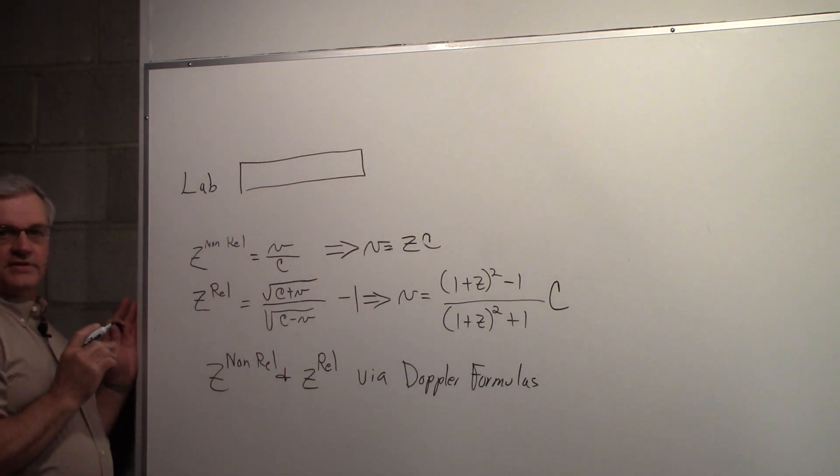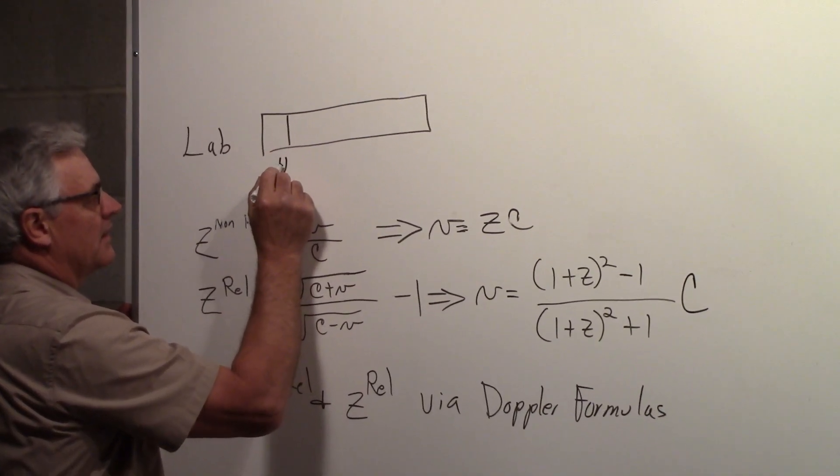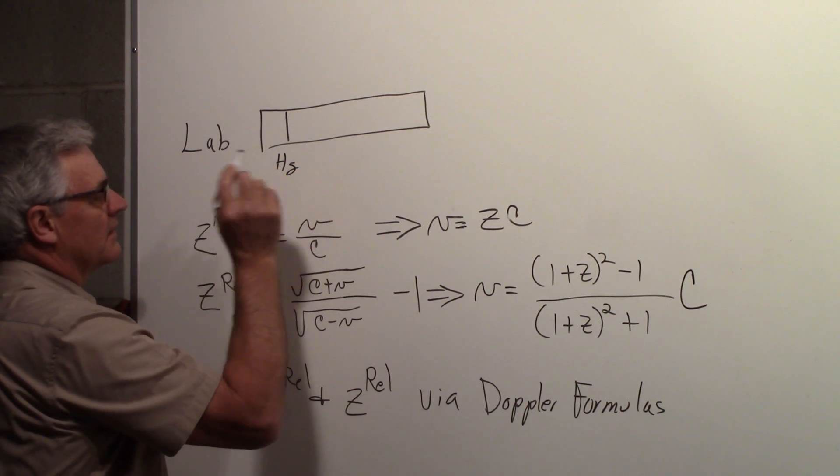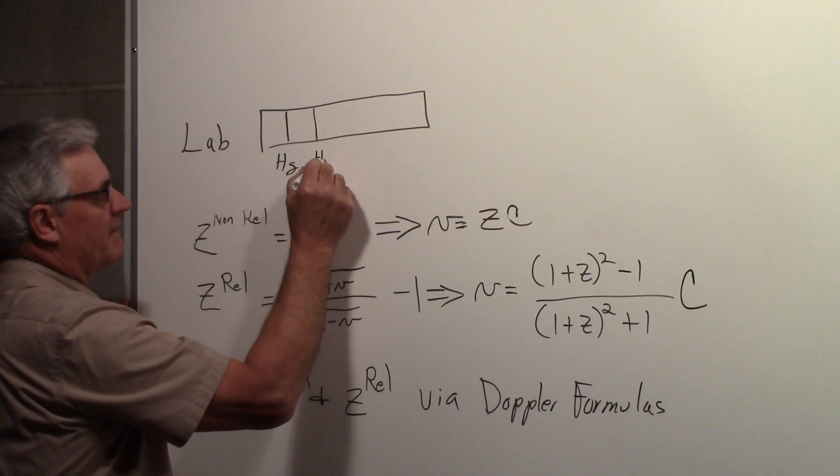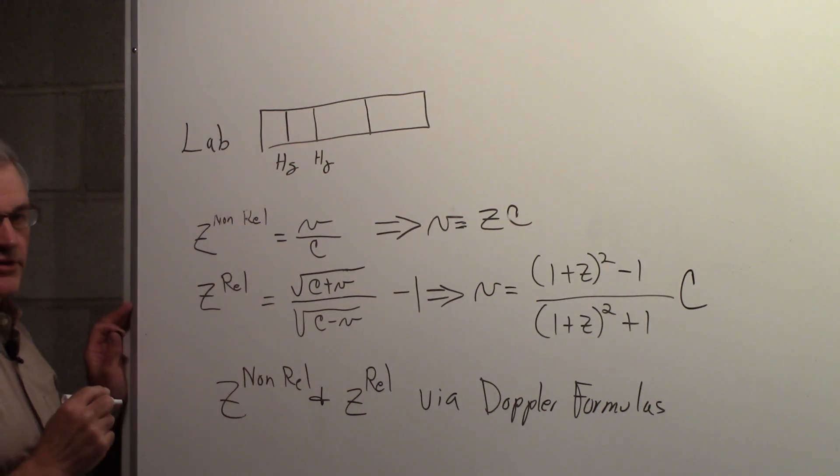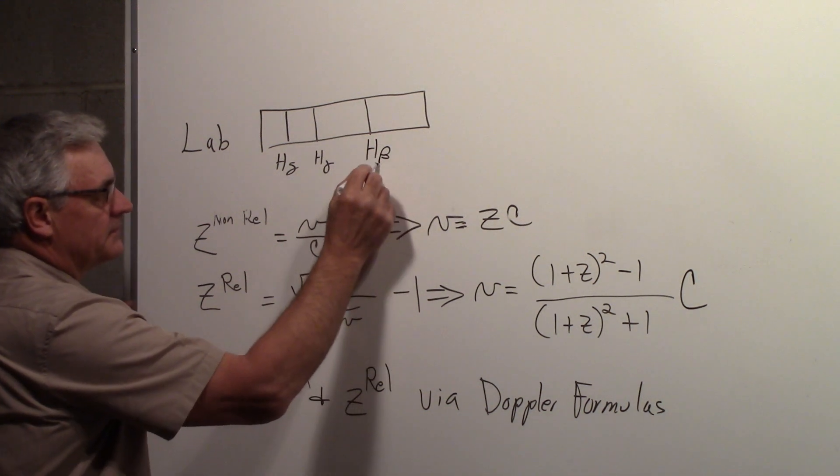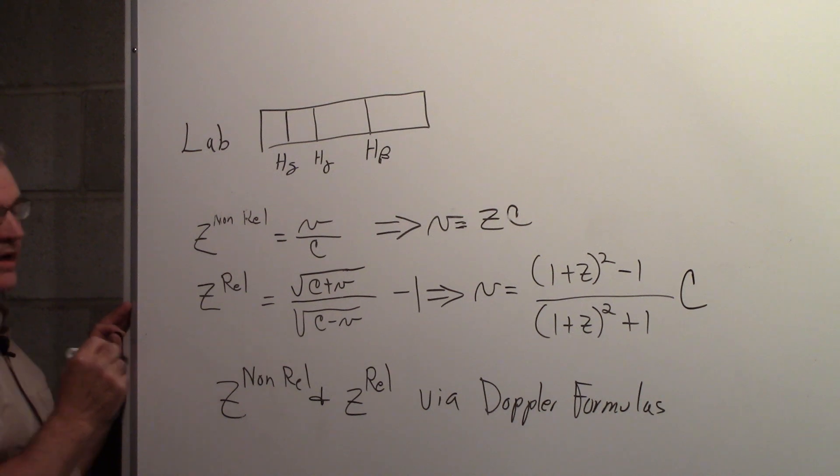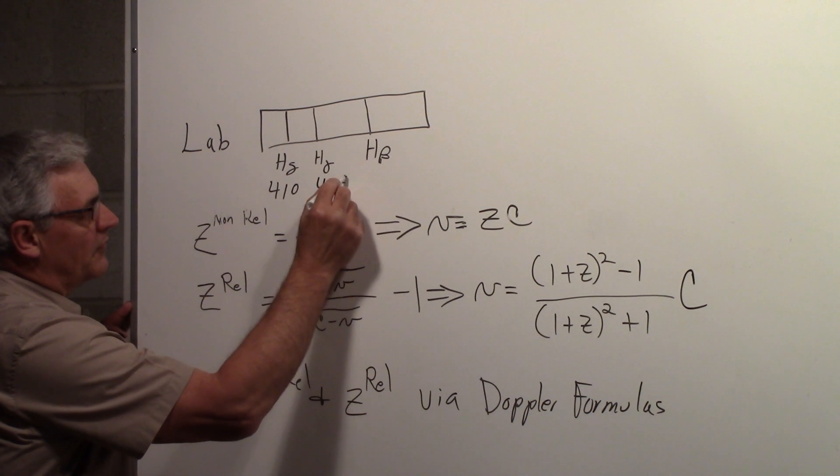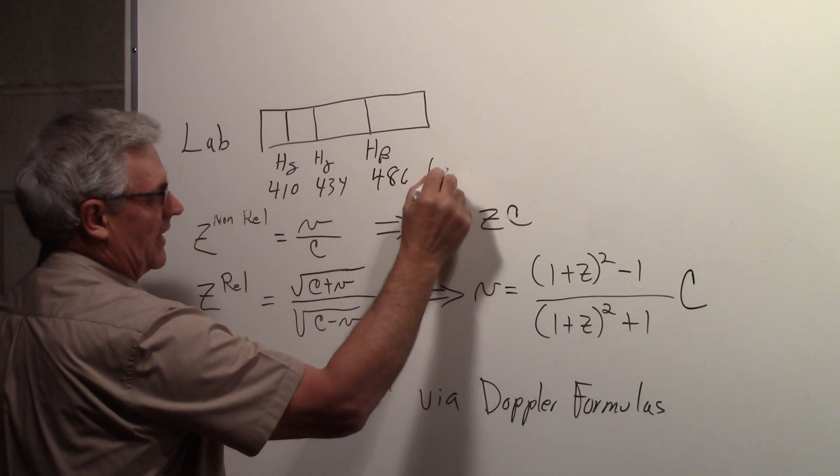And we're going to see a spectrum, and we're going to look at hydrogen lines. And we'll have a hydrogen delta line, a hydrogen gamma line, and a hydrogen beta line. And the wavelengths of those three lines is 410, 434, and 486. That's all nanometers.